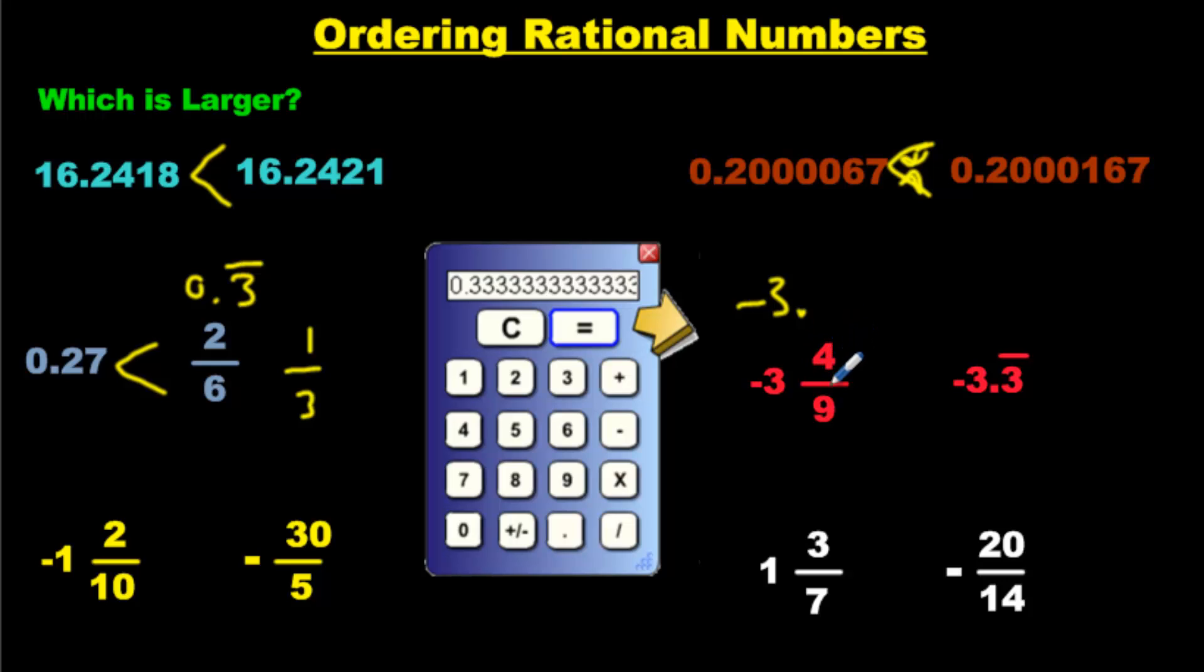Anything over nine is that number repeating. So if it's 4 over 9, it's decimal 0.4444 repeating. If it's 6 over 9, it'll be decimal six repeating. Here we have a four, so it's going to be four forever.